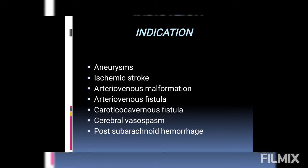In a fistula, the ICA and ECA communicate directly with the cavernous sinus. Cavernous sinuses are dural venous sinuses located on both sides of the sphenoidal bone and the pituitary gland, forming a whole venous network in that region.